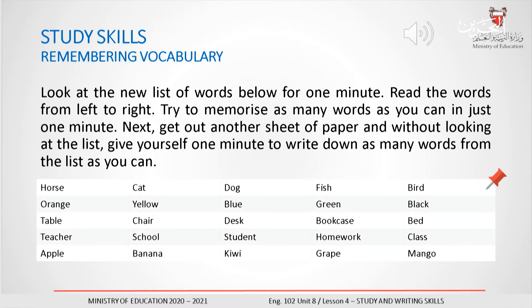Look at the new list of words below for one minute. Read the words from left to right. Try to memorize as many words as you can in just one minute. Next, get out another sheet of paper and without looking at the list, give yourself one minute to write down as many words from the list as you can.